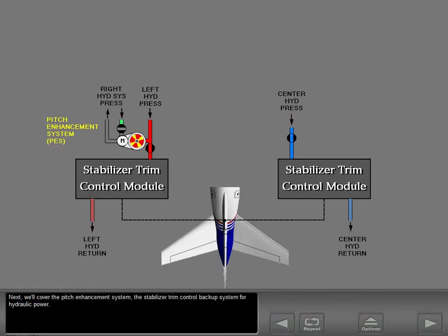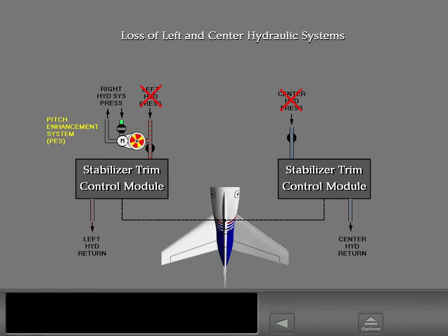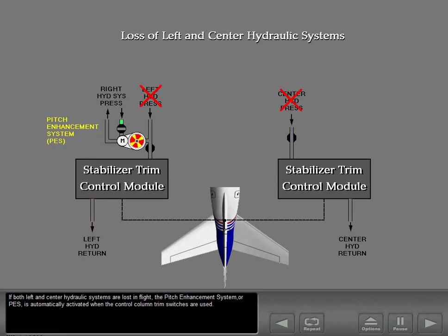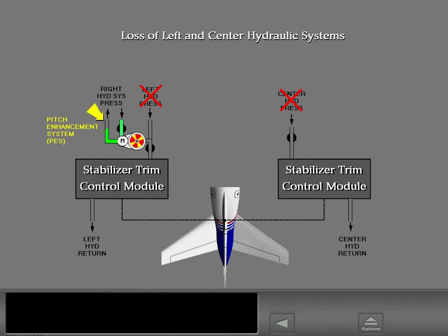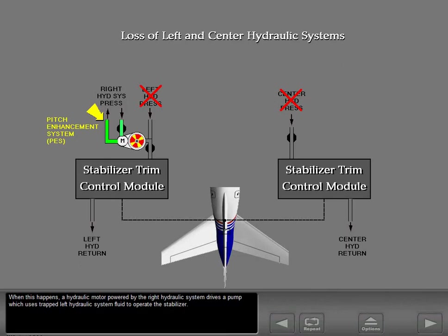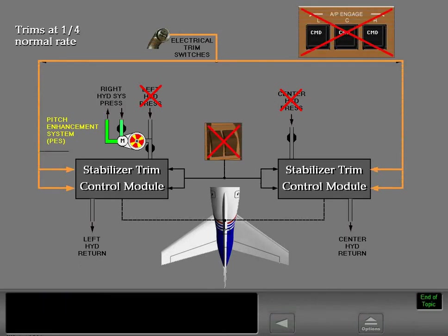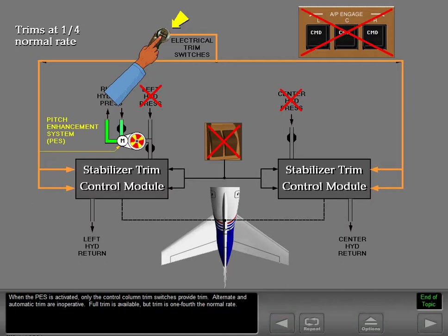Next, we'll cover the pitch enhancement system — the stabilizer trim control backup system for hydraulic power. If both left and center hydraulic systems are lost in flight, the pitch enhancement system, or PES, is automatically activated when the control column trim switches are used. A hydraulic motor powered by the right hydraulic system drives a pump which uses trapped left hydraulic system fluid to operate the stabilizer. When the PES is activated, only the control column trim switches provide trim. Alternate and automatic trim are inoperative. Full trim is available, but trim is one-fourth the normal rate.